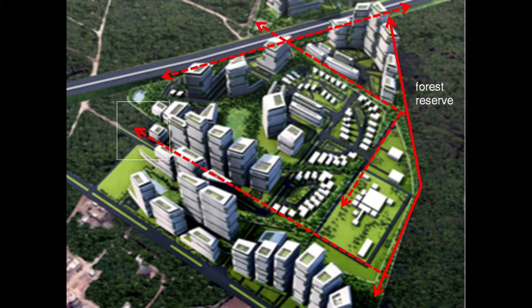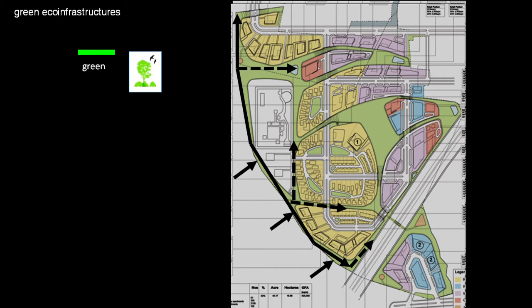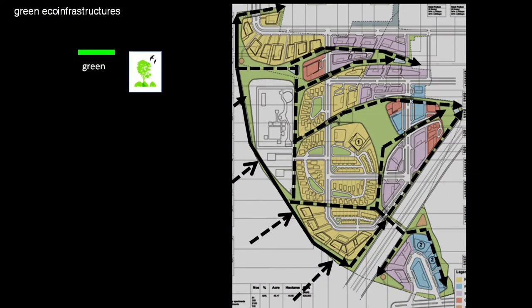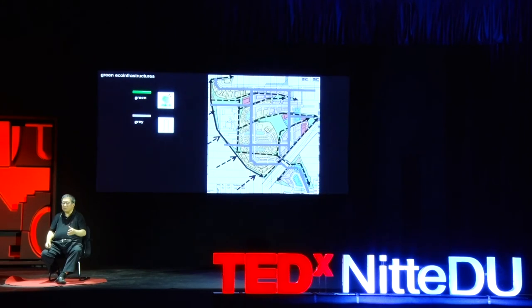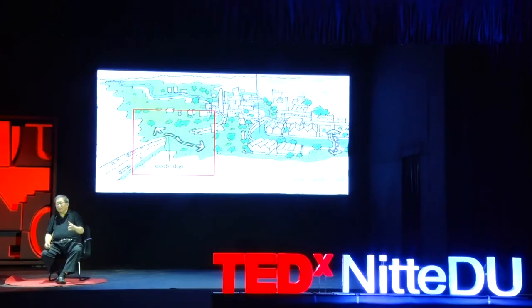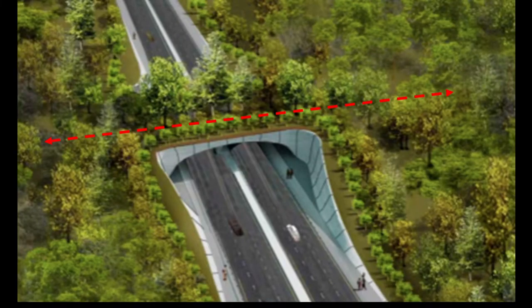In a project we designed in Bangalore, we collected all the species along the edge of the development, which is next to a Forest Reserve, and stretched them across the site as what we call green infrastructure — that's the first thing we do when designing a master plan. But then we load the roads and discover the roads bifurcate our green infrastructure. So we use an eco-bridge that connects the green area from one part of the site to the other.